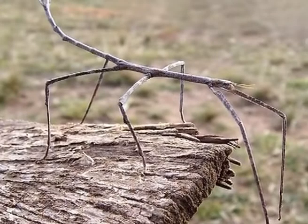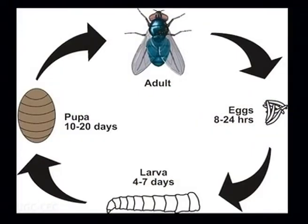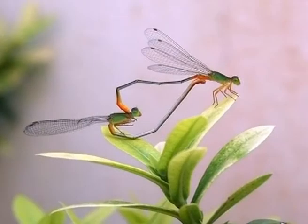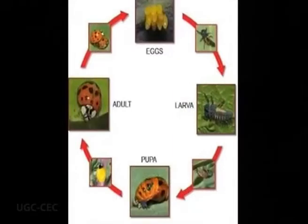Some insect nymphs are aquatic, which means they live in water. These nymphs usually have gills and look very different from the adults. Some insects that have a life cycle of egg, nymph, adult are cockroaches, dragonflies, grasshoppers, and true bugs.